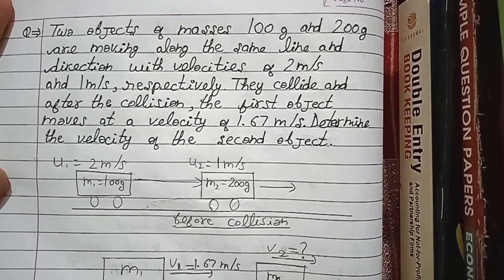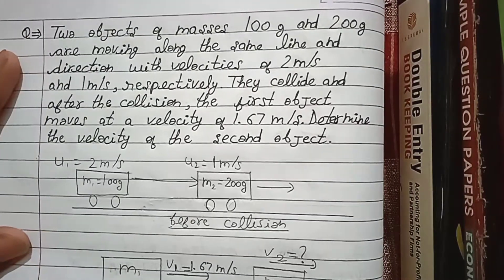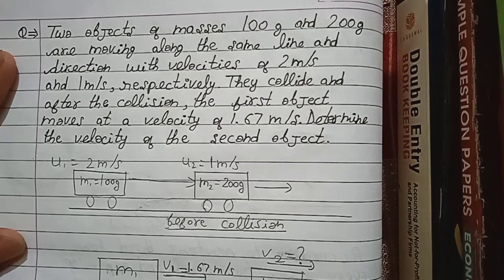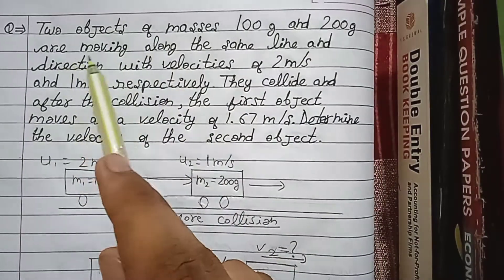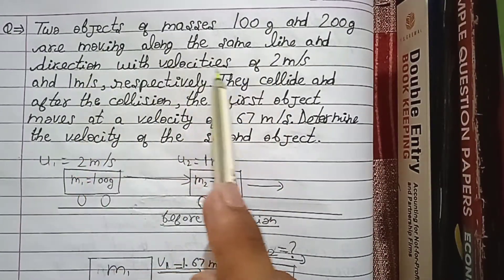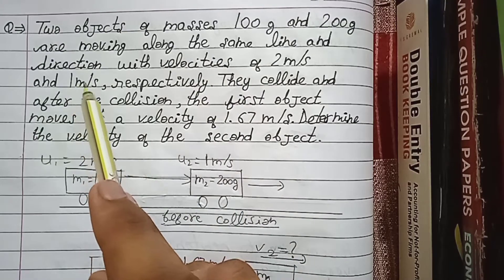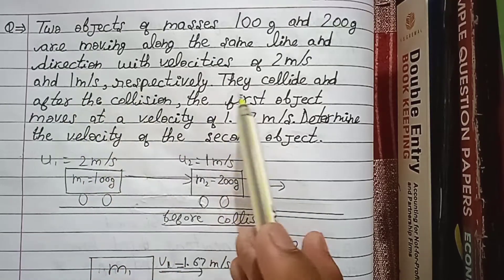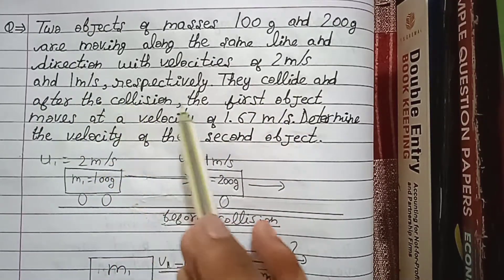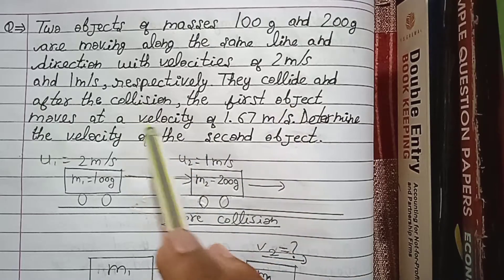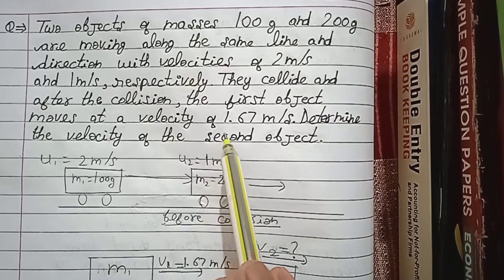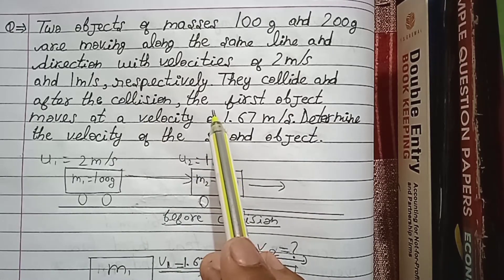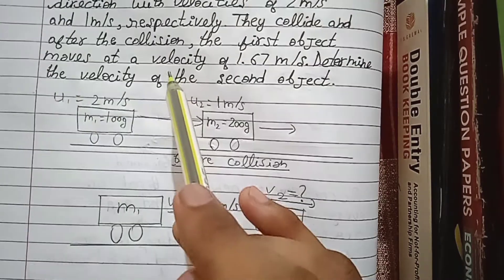Hello friends, welcome to my channel Fantastico Study. In this video I am going to solve a question. Two objects of masses 100 gram and 200 gram are moving along the same line and direction with velocities of 2 meter per second and 1 meter per second respectively. They collide and after the collision the first object moves at a velocity of 1.67 meter per second. We need to determine the velocity of the second object. This is a simple question and I will explain it to you.